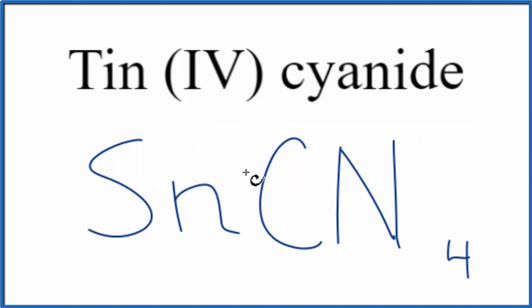Let's get rid of these symbols. And then we need to put parentheses around the cyanide ion here to show that we have 4 separate cyanide ions. So this is the formula for tin, 4-cyanide.